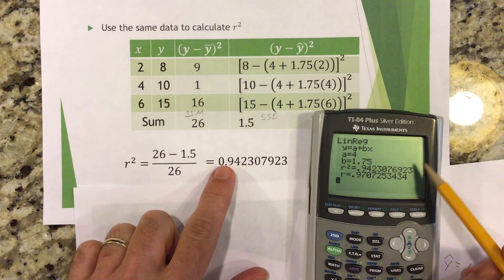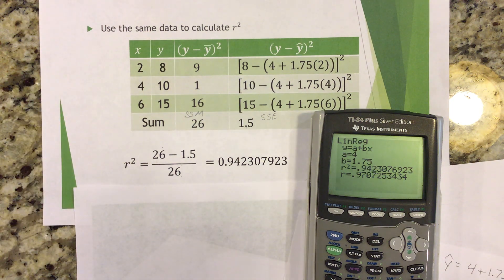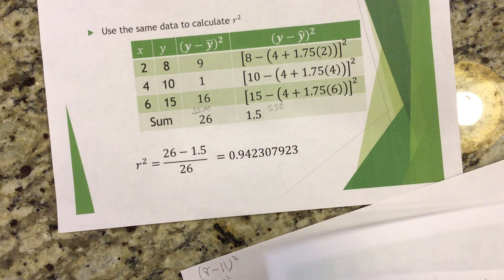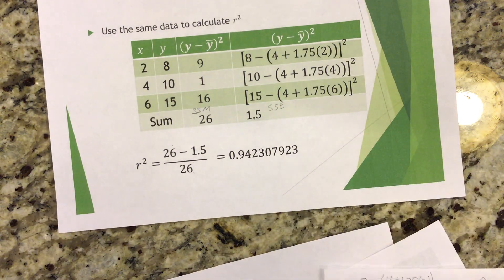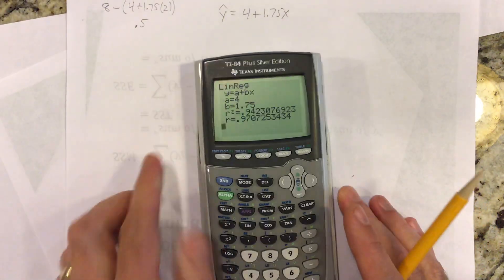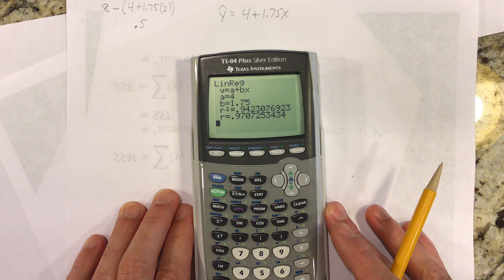Okay, so SSM minus SSE over SSM. There's the R squared and that is the same R squared that we found when we did linear regression. Okay, there we go. The coefficient of determination. So that's the other formula for it. Okay, last thing that I wanted to show you is how to do that in a quicker way.